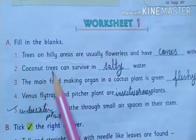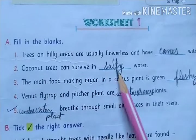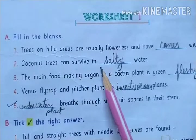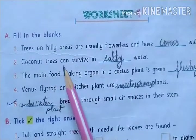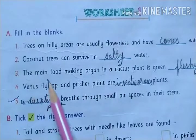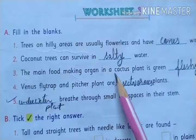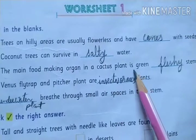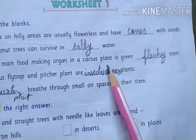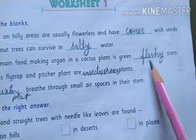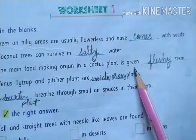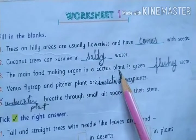Second: coconut trees can survive in salty water. You have seen that mostly coconut trees grow in sea areas. Third: the main food-making organ in cactus plant is the green, fleshy stem. The cactus plant has a very thick, fleshy stem, and spines grow upon that fleshy stem.